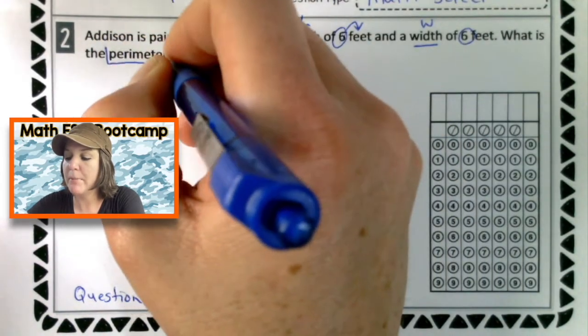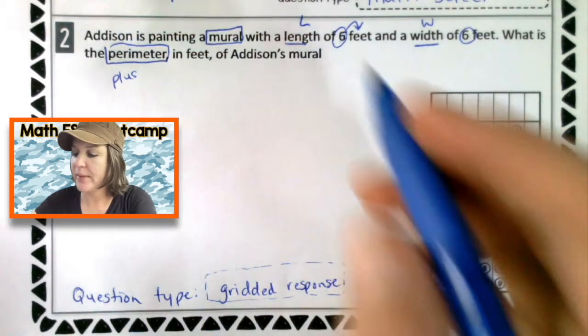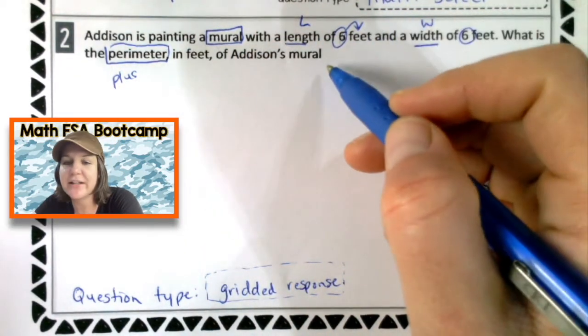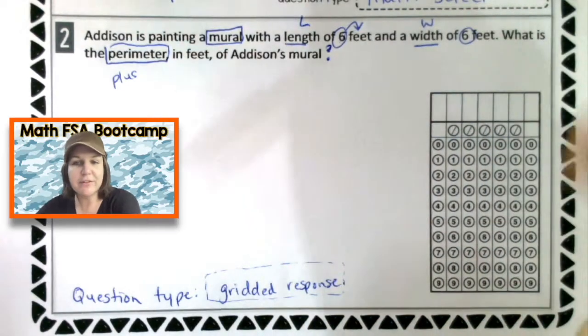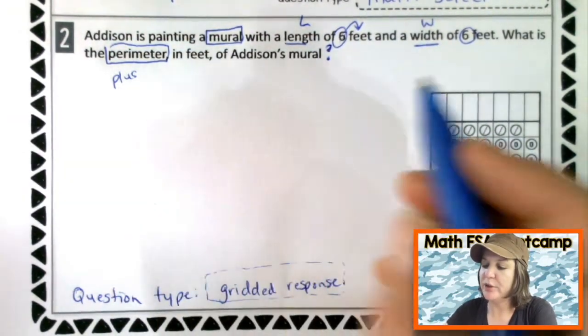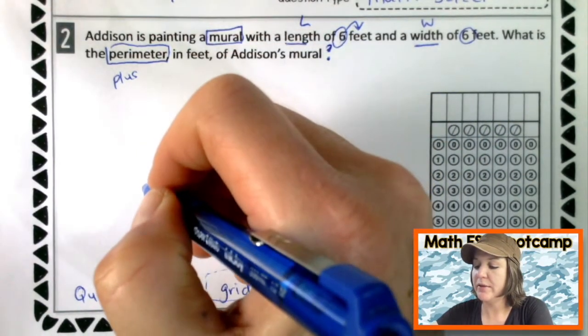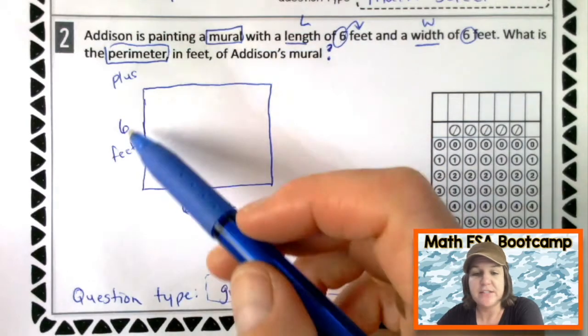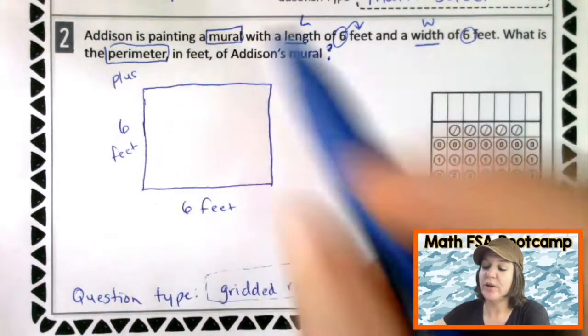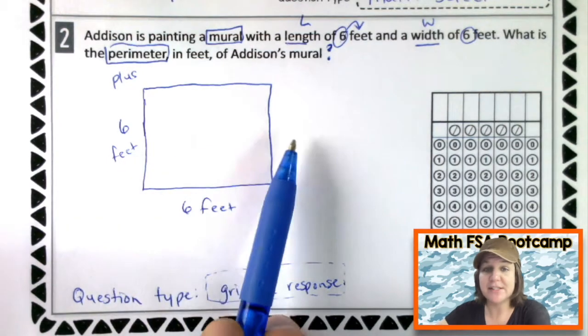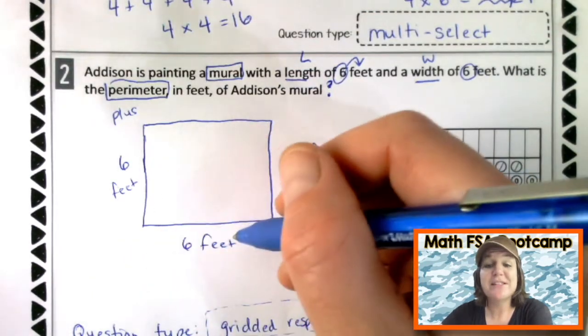All right. So Addison is painting a mural with a length of six feet and a width of six feet. What is the perimeter? Perimeter we think of plus to add up all the sides, right? In feet of Addison's mural. And y'all, what did I forget right there? So if she's painting a mural with a length of six feet and a width of how much? Oh, six feet. So it's a square. We've got six feet and six feet. What is the perimeter? So remember, perimeter means we're adding up all the sides. So if this side is six feet, the opposite side is also six feet. If the bottom portion length is six feet, it also means that this top length is six feet.